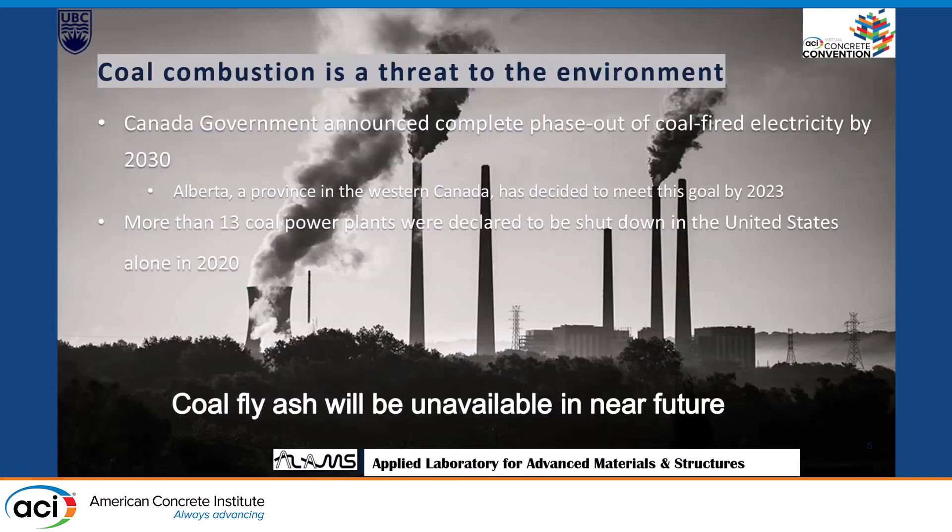Fly ash, the most popularly used supplementary cementitious material, comes from the coal industry, which is also a threat to the environment. The Canadian government has already announced the complete phase-out of coal-fired electricity industries by 2030, and one of the provinces of Western Canada, Alberta, has already decided to meet this goal by 2023.